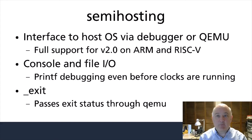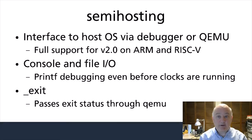Semi-hosting allows a program running in a debug environment to communicate with the debugger. This can be used to provide debug output and status information even before the system clock and I/O devices are running. Semi-hosting works with a hardware debug link like JTAG or from within QEMU. The program places information in registers and memory, then invokes a breakpoint or other instruction which triggers a debugger-visible event and halts the processor. The debugger can then use the register and memory contents to perform an operation such as writing to the console or reading and writing data from the debugger host file system. ARM and RISC-V share the same spec which PicoLibC fully supports.